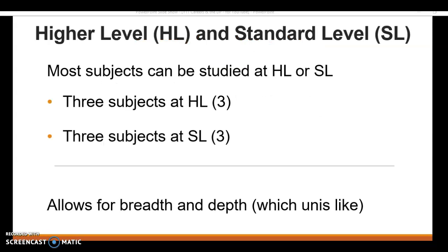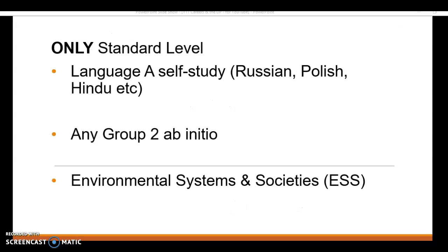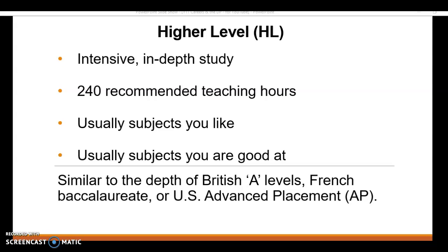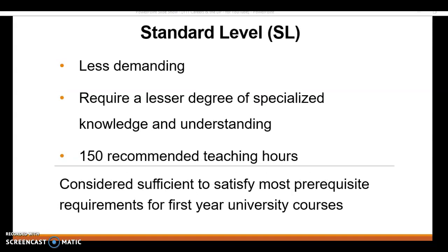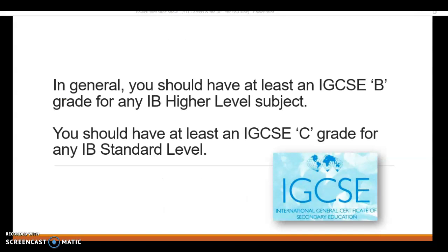Let's talk about the actual subject choices. You need to choose three at higher level and three at standard level. Some subjects are only offered at standard level: language A self-study with an online tutor, any group two ab initio or beginner language subjects, and environmental systems and societies. Higher level is around 240 teaching hours - more difficult and intensive. Standard level is about 150 hours with slightly different assessments. Linking to your IGCSEs, a B or higher could be a higher level subject, and above a C could be standard level.